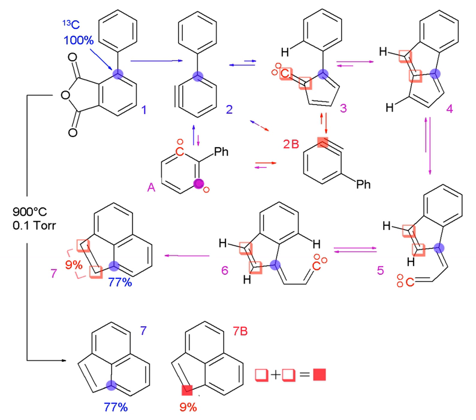Isotopic labeling is a technique used to track the passage of an isotope — an atom with a detectable variation in neutron count — through a reaction, metabolic pathway, or cell.